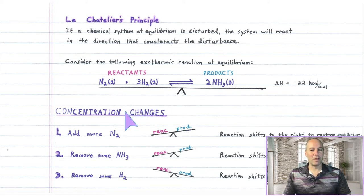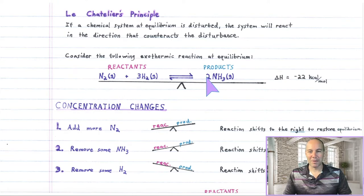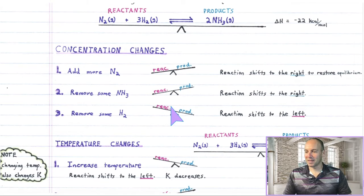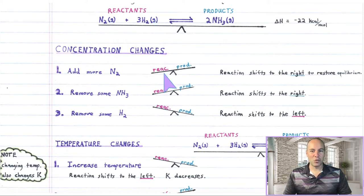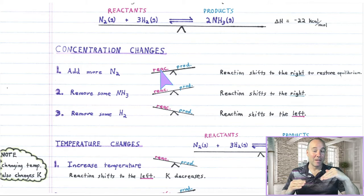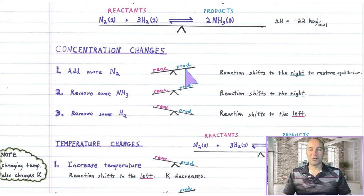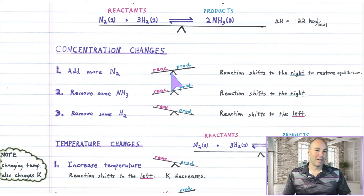Now let's see what happens if we disturb the mixture by changing some of the concentrations of the chemicals involved in the reaction. For our first disturbance, let's add a little bit more nitrogen to the mixture. What that does is it makes the mixture have too much reactant. So you can see the balance beam shifts towards the reactant side. There's too much reactant. And to get back to equilibrium, some of that reactant has to convert into product. So the reaction has to shift to the right to restore equilibrium. And that's how easy Le Chatelier's principle concepts are — if you use the balance beam, hopefully it makes sense.